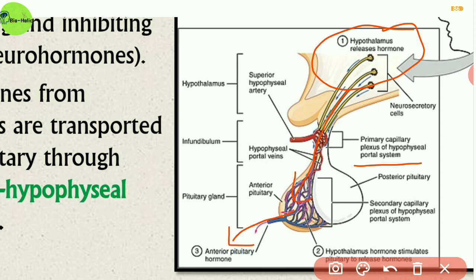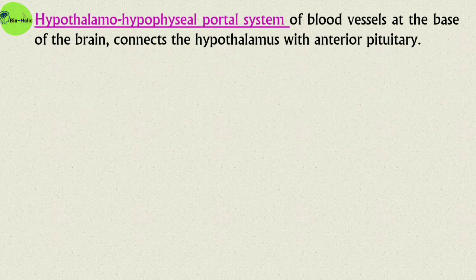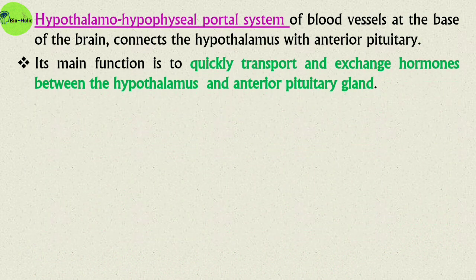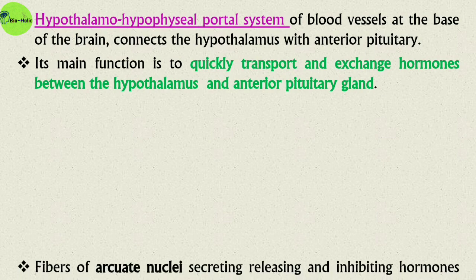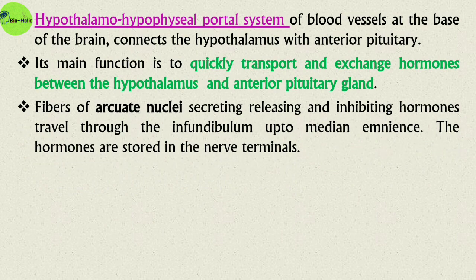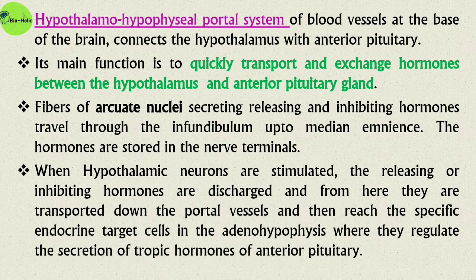The hypothalamus-hypophysial portal system of blood vessels at the base of the brain connects the hypothalamus with the anterior pituitary. Its main function is to quickly transport and exchange hormones between the hypothalamus and the anterior pituitary gland. Fibers of the arcuate nuclei secreting releasing and inhibiting hormones travel through the infundibulum up to the median eminence, where hormones are stored in the nerve terminals. When hypothalamic neurons are stimulated, the releasing or inhibiting hormones are discharged, transported down the portal vessels, and reach specific endocrine target cells in the adenohypophysis, where they regulate the secretion of tropic hormones.